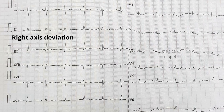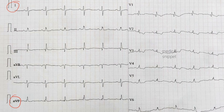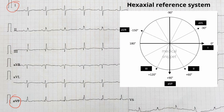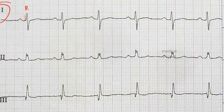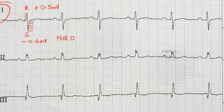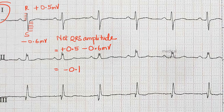There is right axis deviation. To calculate axis we have to look at QRS complexes in lead 1 and AVF. Let's plot the net QRS amplitude in the hex axial reference system. In lead 1 the R wave amplitude is five small boxes, that is positive 0.5 millivolt. The amplitude of S wave in lead 1 is six small boxes, that is minus 0.6 millivolt. So the net amplitude is minus 0.1 millivolt. Let's plot it in the hex axial reference diagram.